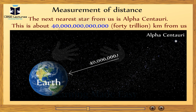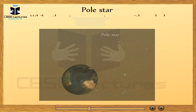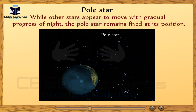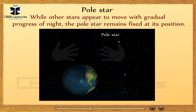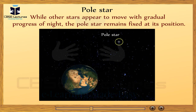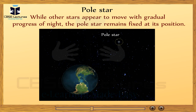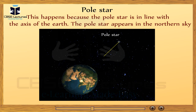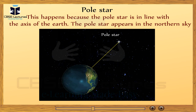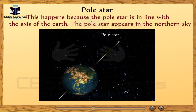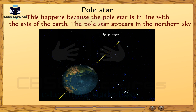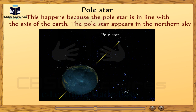Do you know what is a pole star? While other stars appear to move with the gradual progress of night, the pole star remains fixed at its position. This happens because the pole star is in line with the axis of the Earth. The pole star appears in the northern sky and is only visible from the northern hemisphere. The fixed position of the pole star has helped humans since ages.